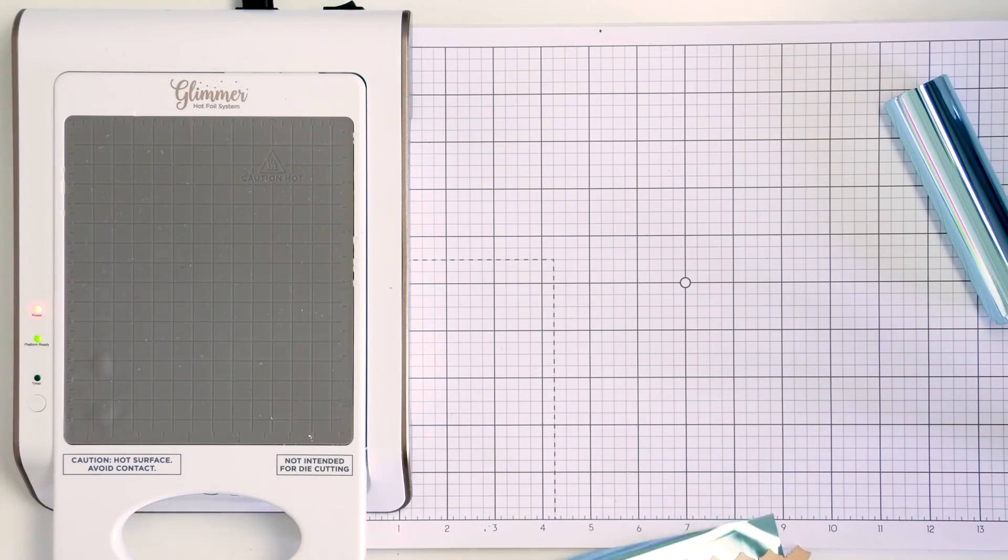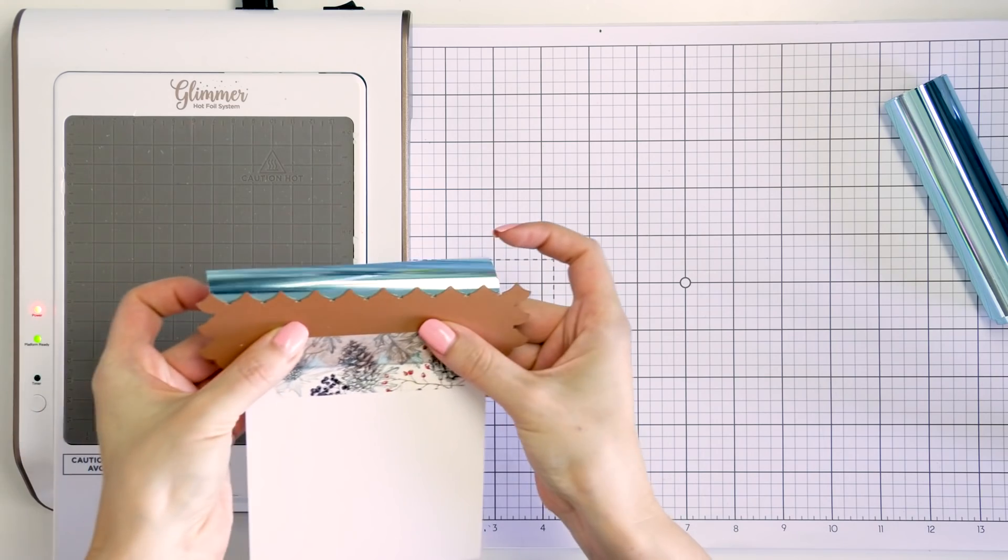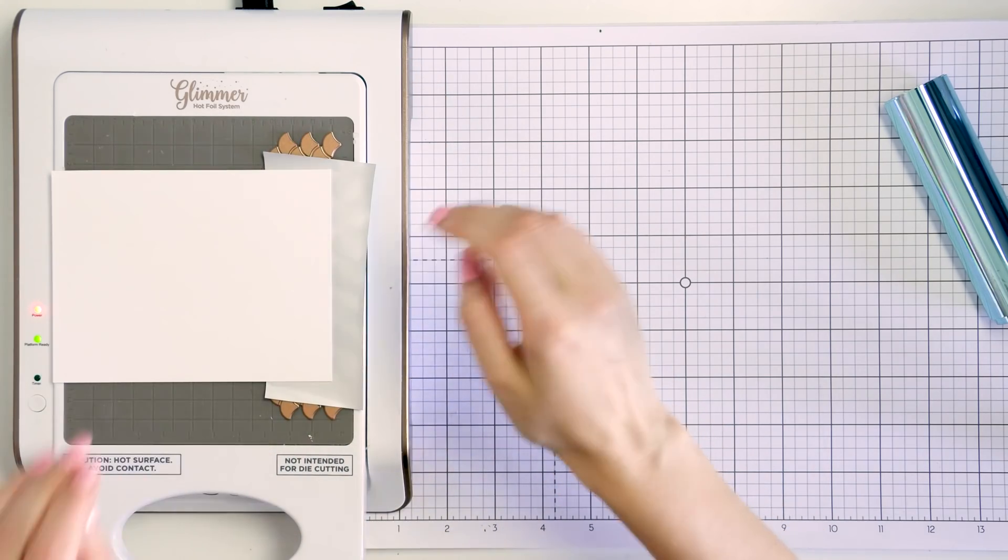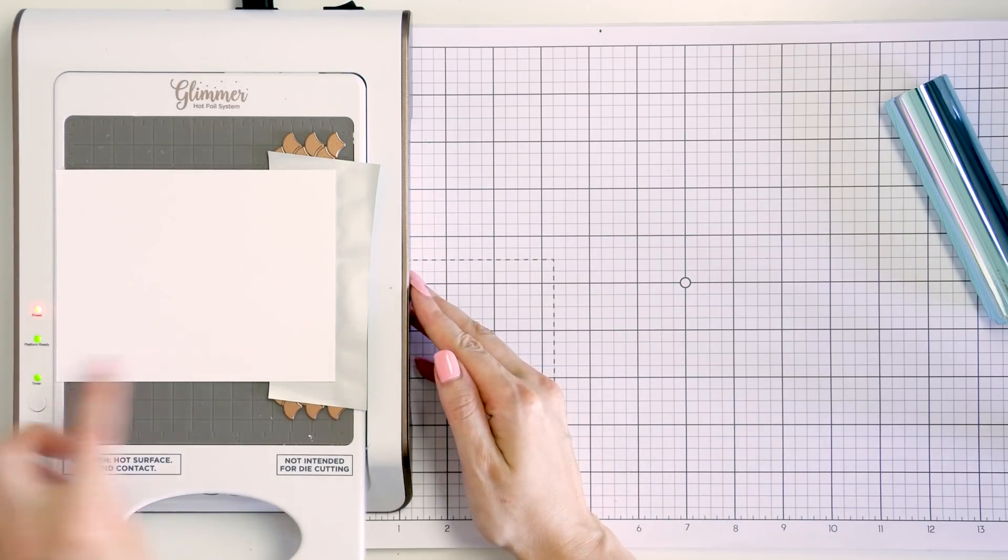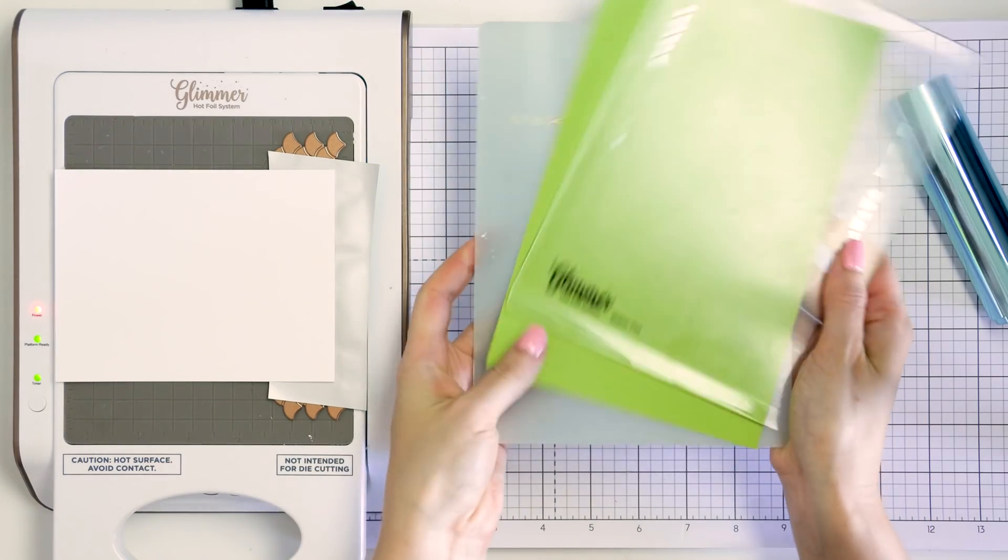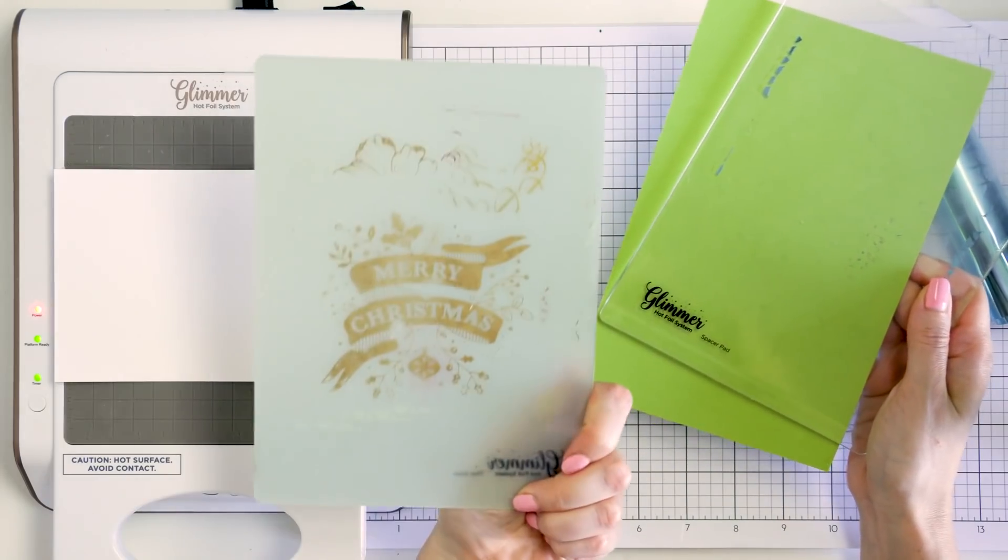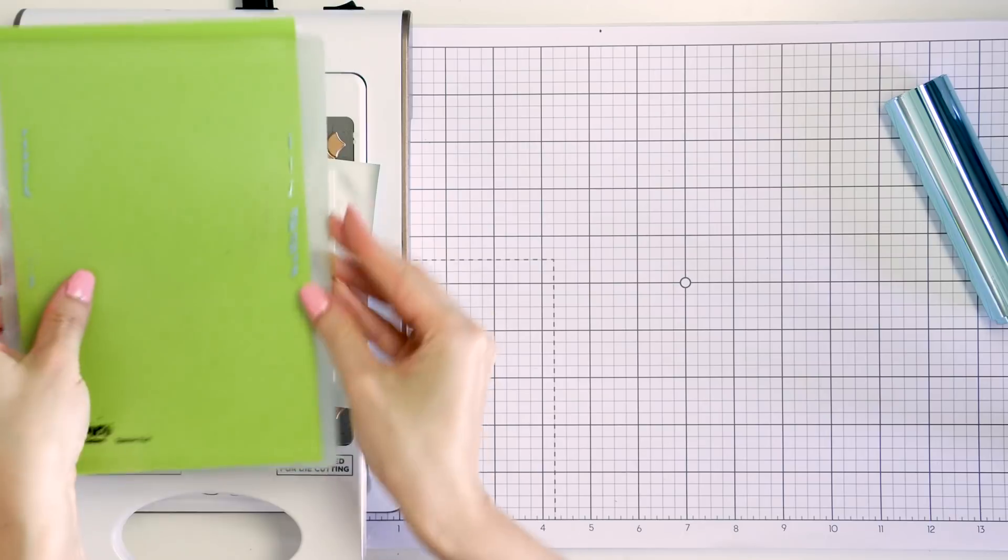Meanwhile, my glimmer hot foil machine has been heating up and is now hot and ready to foil. You can tell it is ready because the two top lights, the red light and the green lights are on. To begin the heating process, I've pressed the timer button and this starts to heat up the glimmer plate that I have just placed on the machine. This will take about one minute to properly heat up the plate.